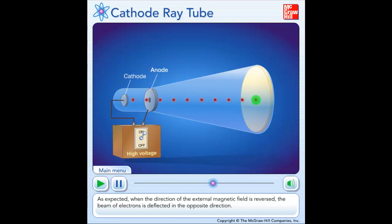As expected, when the direction of the external magnetic field is reversed, the beam of electrons is deflected in the opposite direction.